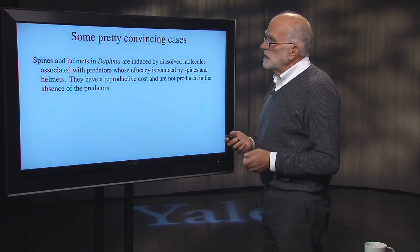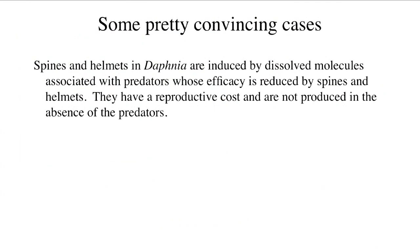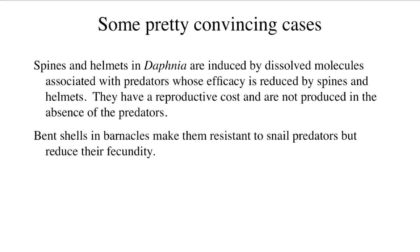Here are some convincing cases. The water flea Daphnia produces spines and helmets when it encounters dissolved molecules associated with predators, and the efficiency of predators in eating Daphnia is reduced by the spines and helmets. Daphnia that makes spines and helmets has fewer babies — a reproductive cost — and they are not produced when there are no predators around. Barnacles grow in a way that bends their shells over if there are snails in the environment; they can smell the snails' urine, and this bending reduces fecundity but improves survival when snails are present.